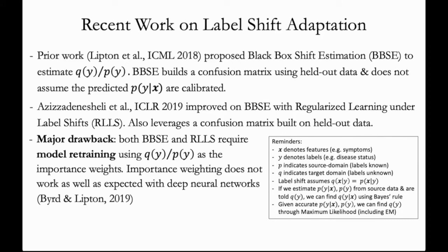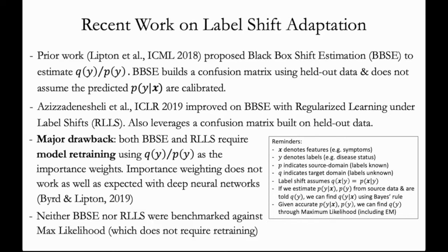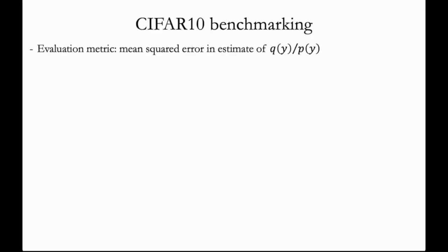Follow up work improved on BBSE using an approach called regularized learning under label shift or RLLS. And this work also leverages a confusion matrix that is found on held out data. A major drawback of both of these approaches is that they require model retraining using the shift ratio q(y) divided by p(y) as the importance weights. But importance weighting has been shown to not work as well as expected with deep neural networks. Further, neither BBSE nor RLLS were benchmarked against the maximum likelihood approach, which does not require model retraining.